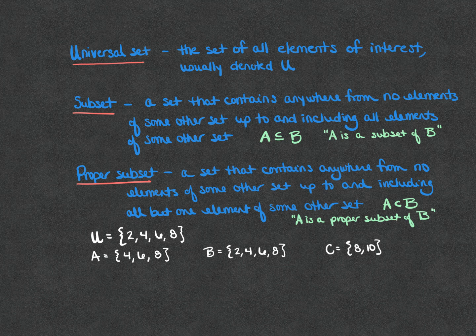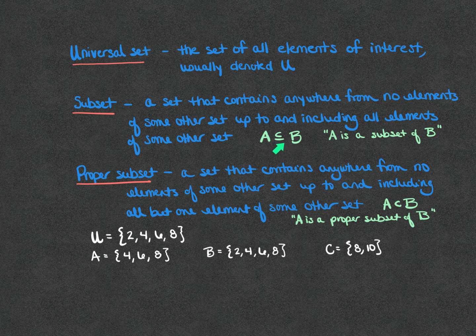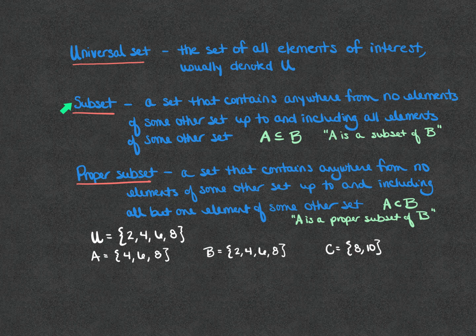Once we've defined our universal set, we can have a subset. A subset is a set that contains anywhere from no elements of some other set — usually the universal set — up to and including all elements of that other set. The notation is A is a subset of B. For example, if all the students in a class is the universal set, a subset would be zero students, five students, or everybody — anywhere from zero people up to everyone.